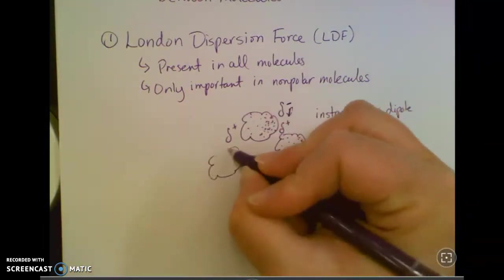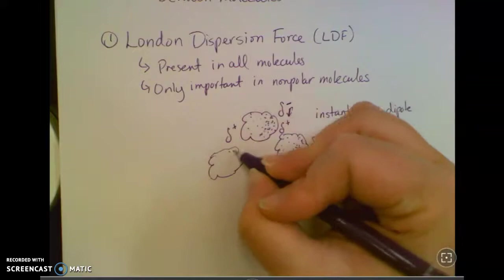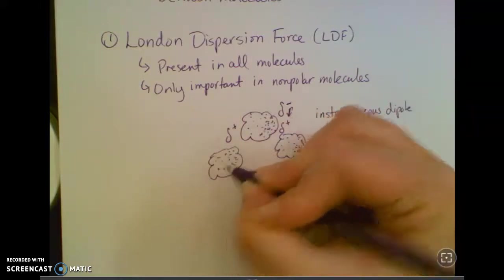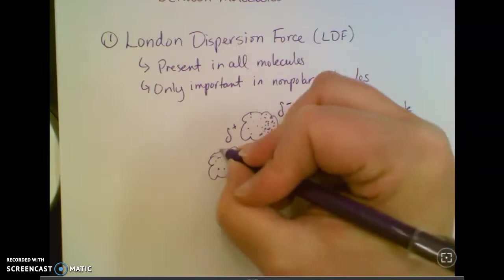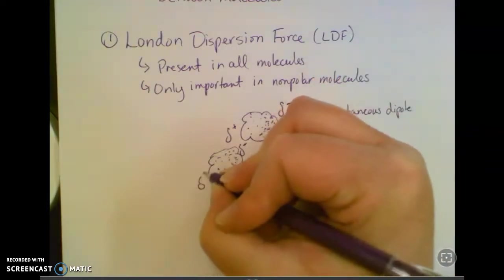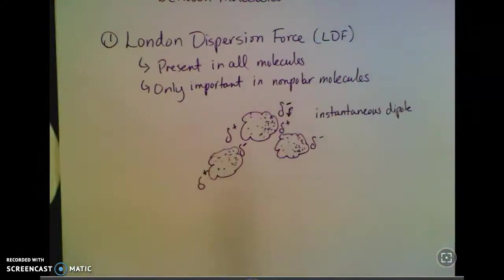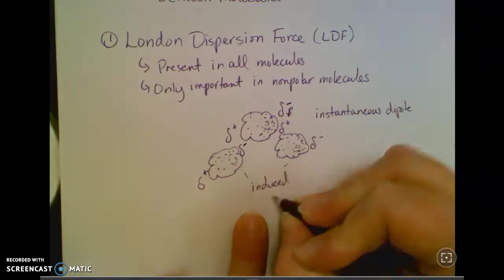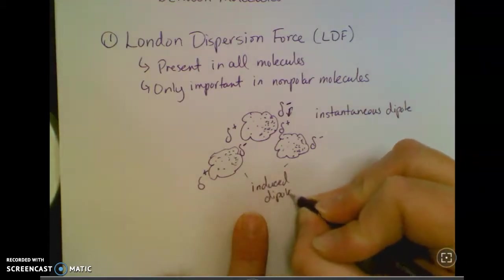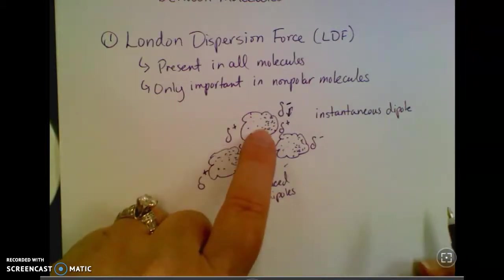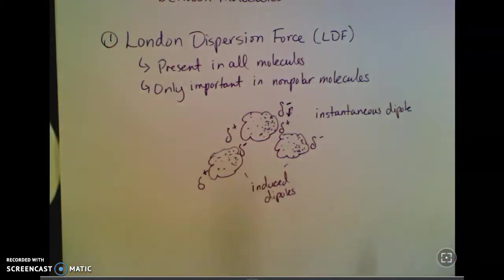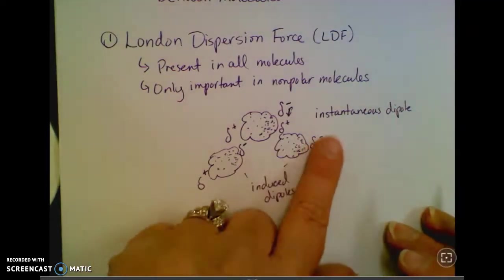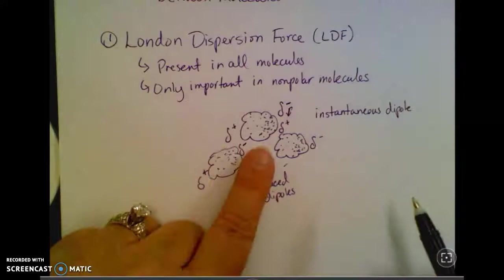The opposite would happen on this side. Since this is a little bit positive, these electrons get attracted. It gets a little bit negative here, a little bit positive here. It's sort of a cascade effect. We call these induced dipoles, because when one of them gets bunched up, it affects the ones around it. Those attractions come and go pretty quickly. They don't stay around, but it's enough to cause a little bit of attraction for these molecules.